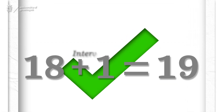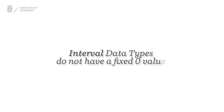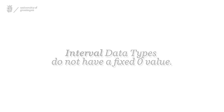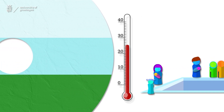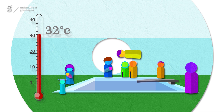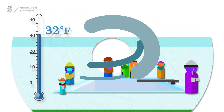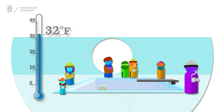Interval data types do not have a fixed zero value. What zero degrees means depends on the scale you use. 32 degrees Celsius means it is time to take a dive in the nearest swimming pool, while 32 degrees Fahrenheit gives us a totally different picture — scarves, mittens, and hot cocoa.